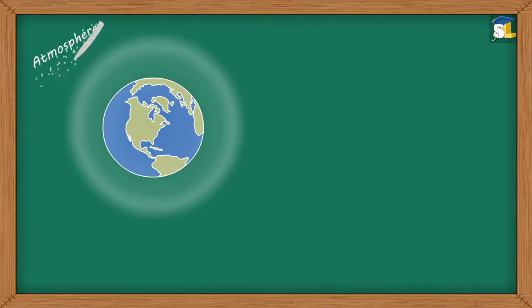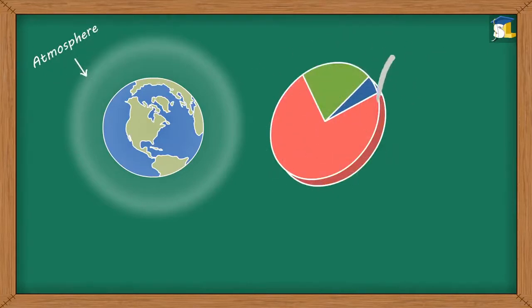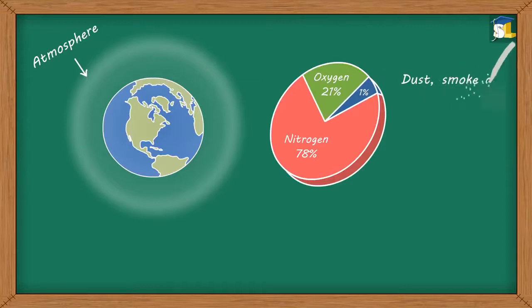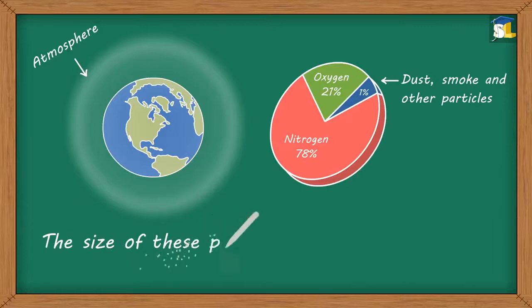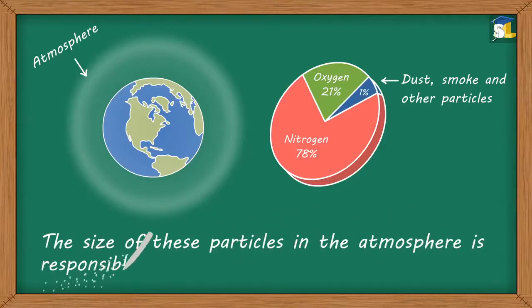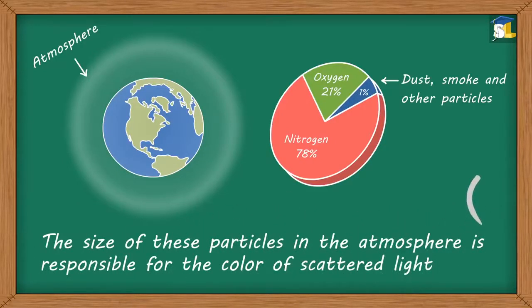We know that our atmosphere primarily consists of oxygen and nitrogen particles, along with dust, smoke, and other particles in comparatively smaller proportions. The size of these particles in the atmosphere is responsible for the color of scattered light.